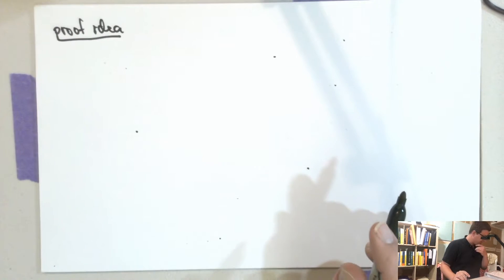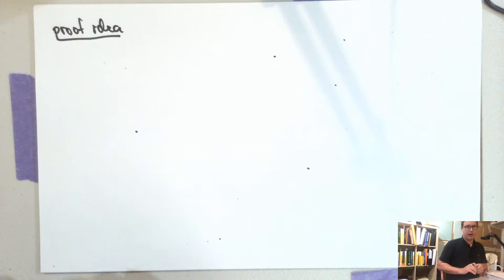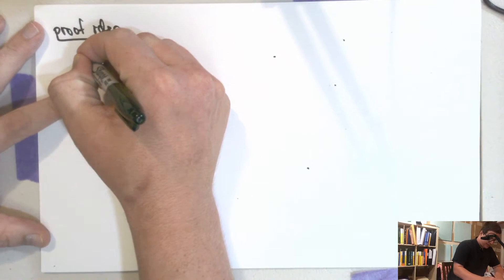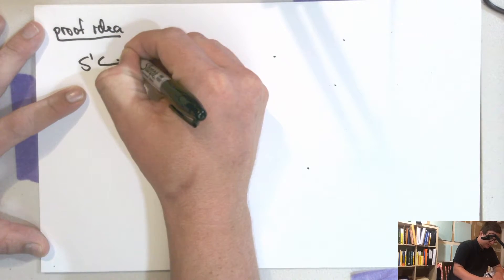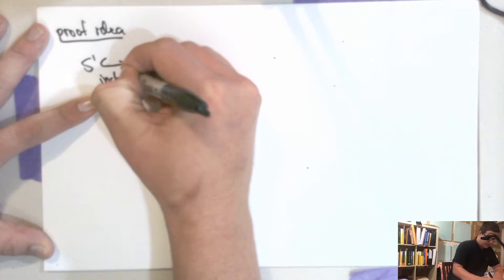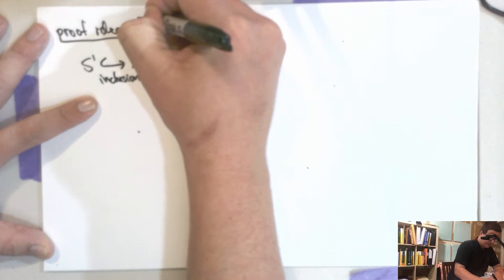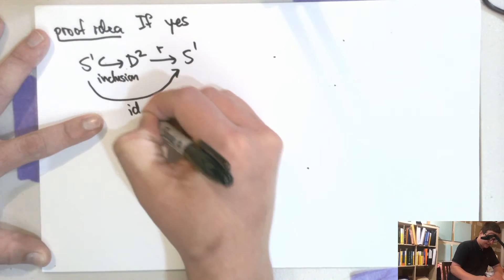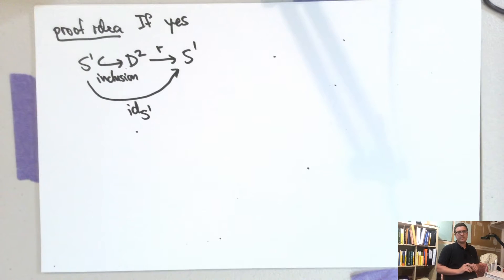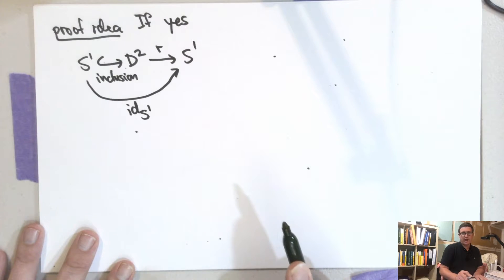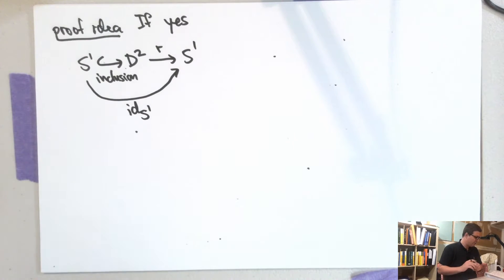So here's the proof idea. So we need a way of deriving a contradiction or detecting that something's false or use some invariance of our topological space that is going to mess things up. So what we'll have is S¹ includes into D². So this is an injective map. It's a continuous map. It's just the inclusion. And if we had a retract, if yes, if we had a retract, then we would have this thing here. And this composition here would be the identity on S¹. So this is the map which just sends X to X. And so the strategy is to apply a functor to this map.